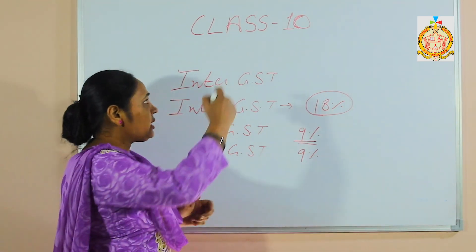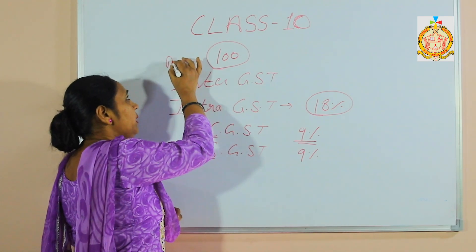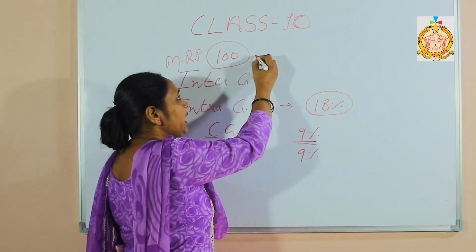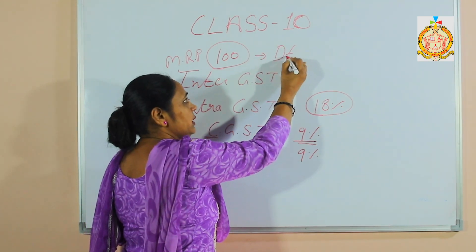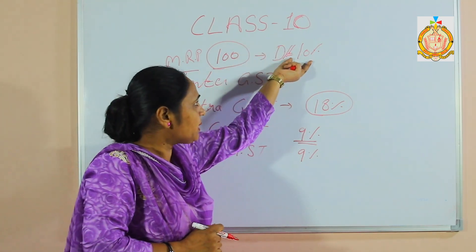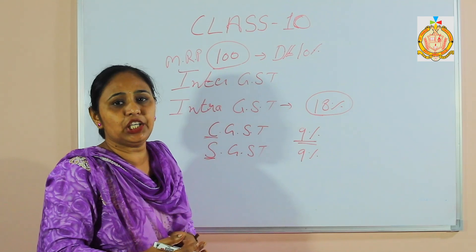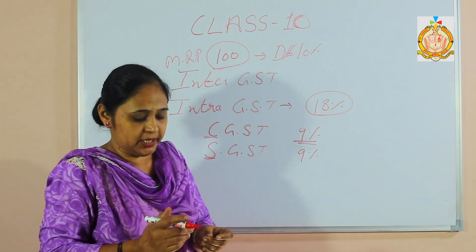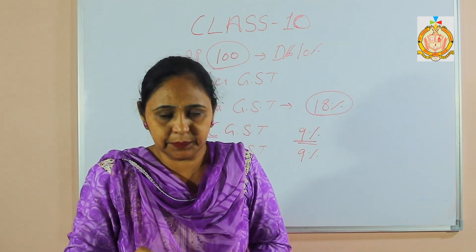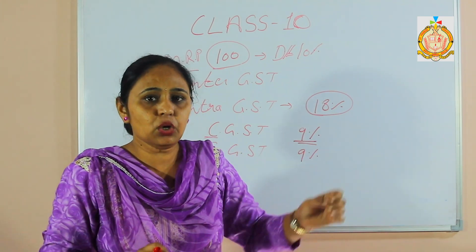For example, suppose there is an item with an MRP of 100 rupees and there is a discount of 10%. That means I will pay 10% discount on 100, so I have to pay 90 rupees — that is the selling price. So the terms are: cost price, then market price, then discount, and after that, selling price.